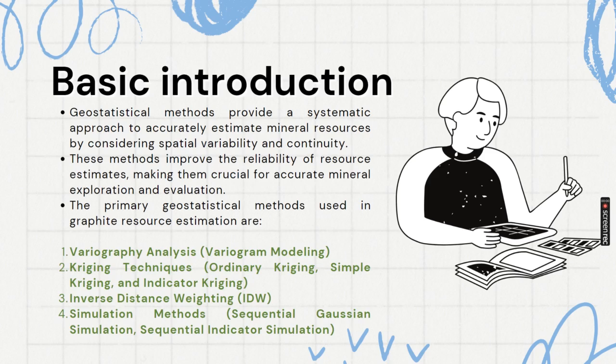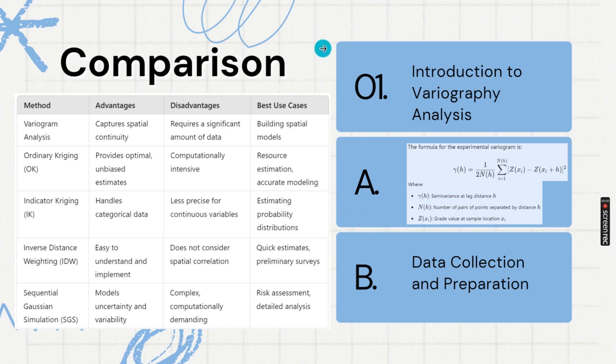Then inverse distance weighting, then simulation method, sequential Gaussian. In this video we will be discussing, because the video will become otherwise lengthy, we will be discussing first variography, then kriging with very easy examples. In the next video, we will be discussing inverse distance weighing and simulation methods. If we have an idea about these four, we will be able to do ore reserve estimation based on borehole data.